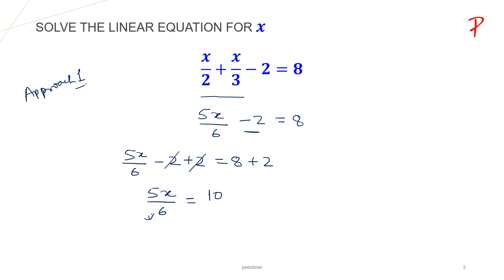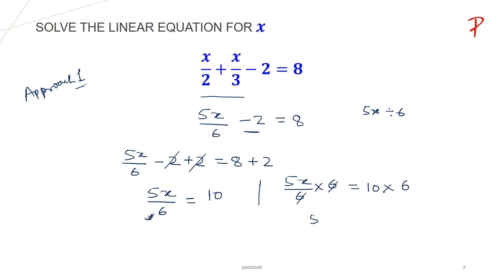Now I have to remove 6 from the denominator. So we have 5x upon 6 is equal to 10. Since 5x upon 6 is nothing but 5x divided by 6, in order to remove 6 we have to multiply both sides by 6. This 6 and this 6 will cancel each other, and now we have 5x is equal to 10 multiplied by 6, which is 60.